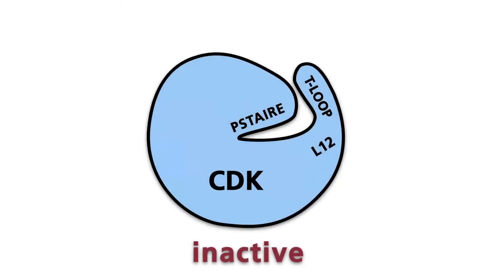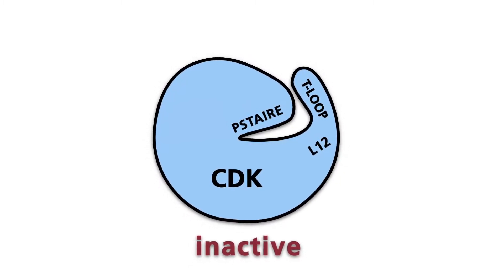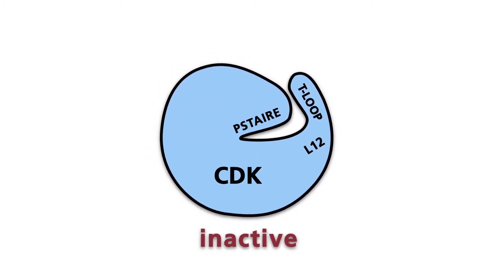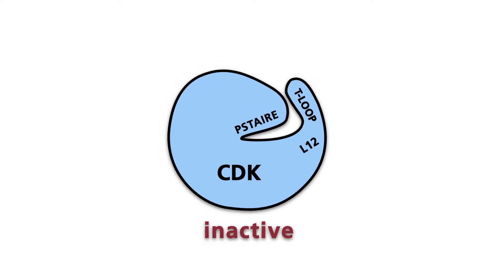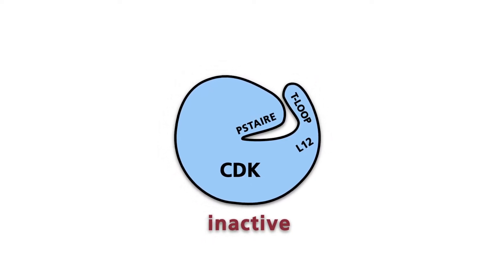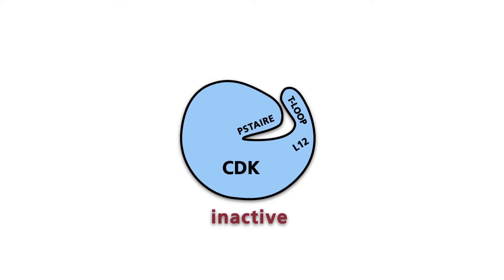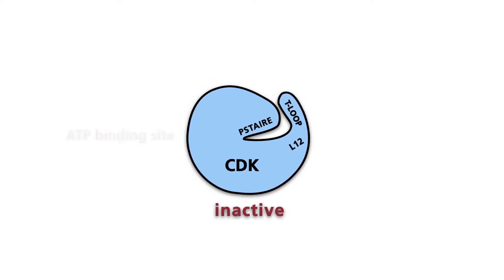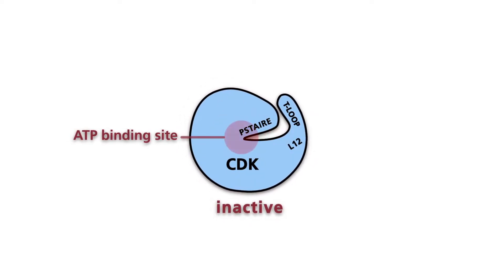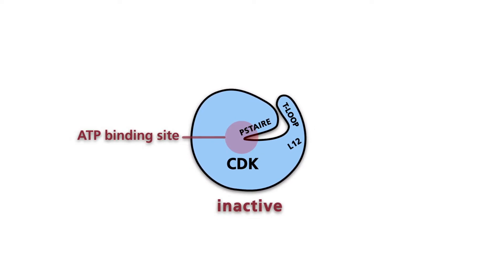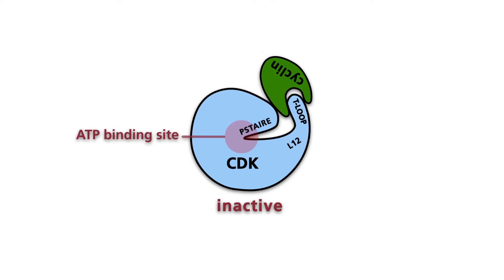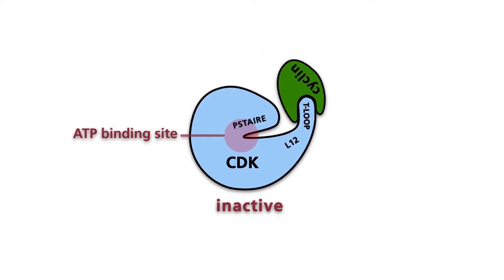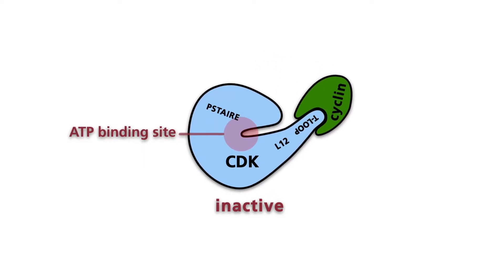X-ray crystallographic studies have given interesting insights into the structural aspects of this activation. In a non-activated CDK, the ATP binding site is buried in a deep cleft. The cleft is blocked off by what's called a T-loop. The binding of cyclin to the CDK leads to the conformational change of the L-12 helix, which allows the T-loop to swing out and leave the cleft open.